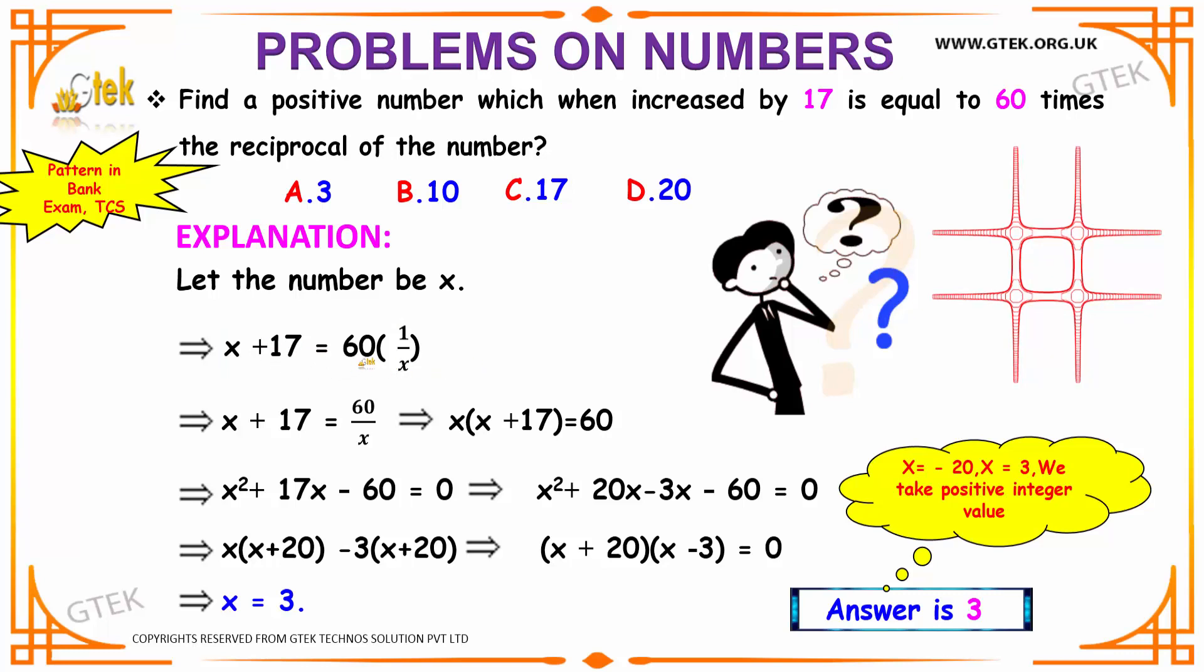Multiplying x to the left hand side you get x(x + 17) = 60. Multiplying x inside you get x² + 17x - 60 = 0.